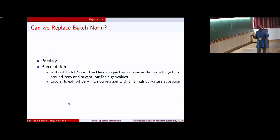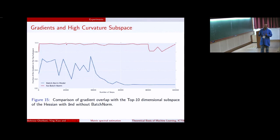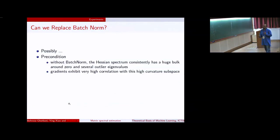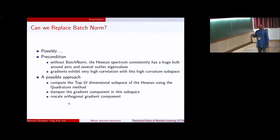Here is the example. Without batch norm, you can see that the gradients lie in the top 10 subspace of the Hessian, and most of the energy is right there. It's of course not true when it comes to the stuff with batch norm, and which is why preconditioning might not be that useful when batch norm is present. So a possible approach is just compute the 10-dimensional subspace, like what I described, using the quadrature method. We dampen the gradient components in this subspace, and rescale the orthogonal gradient component, see if we can do any better.